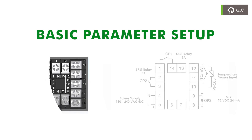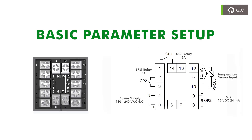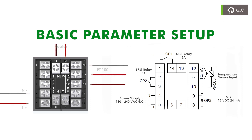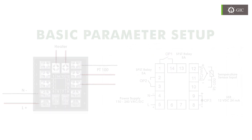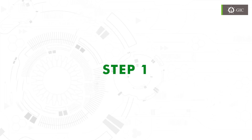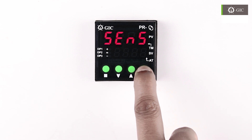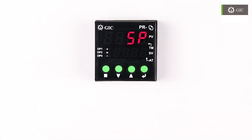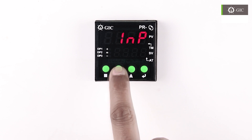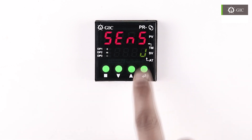Let us begin with the basic parameter setup. Start and power on the temperature controller from default factory settings, after all necessary connections for temperature sensor and power supply are connected. The first step is to select input. Press the enter key for 3 seconds to enter into the main menu. Using the scroll down key, go to INP then press enter.